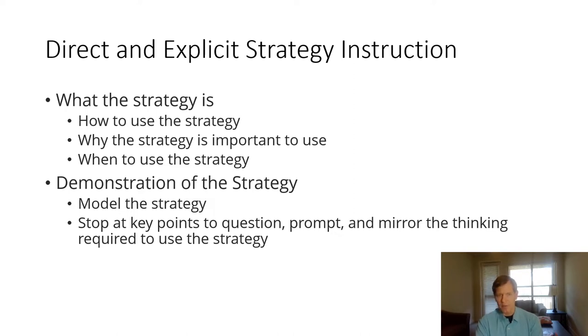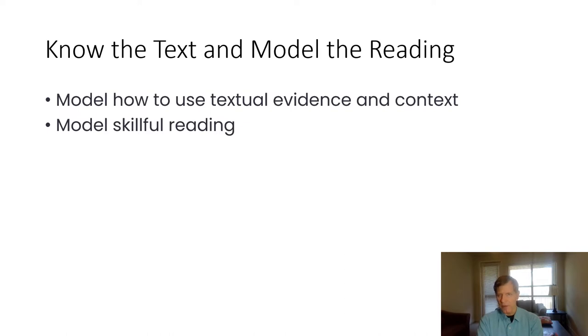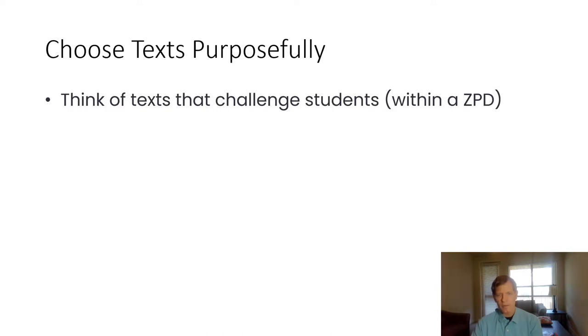You want to very explicitly demonstrate the use of this strategy for students. You want to model how to use, for instance, textual evidence and context as you're reading. Generally speaking, you want to use texts that are within that child's zone of proximal development—above what the child can do easily independently but not to the point of frustration. As you're providing guidance and assistance to students, things the child needs help with right now, eventually that child will be able to do with mastery independently.